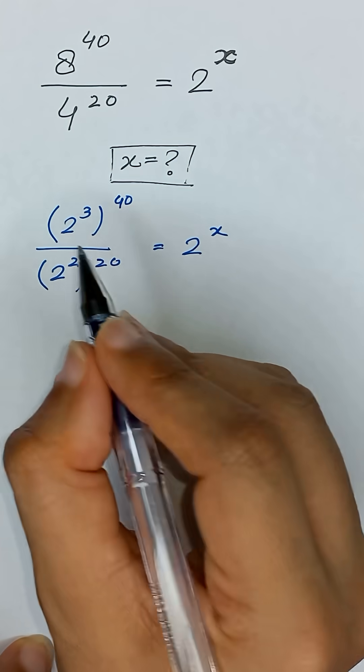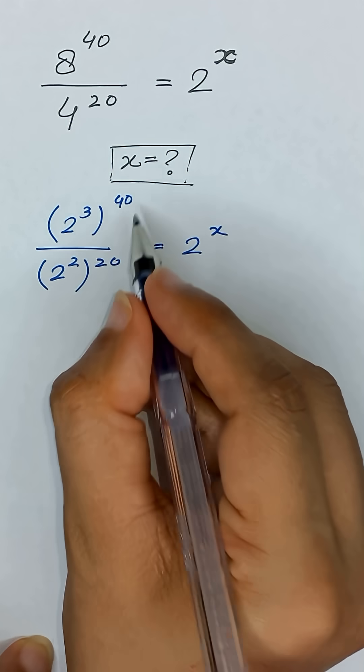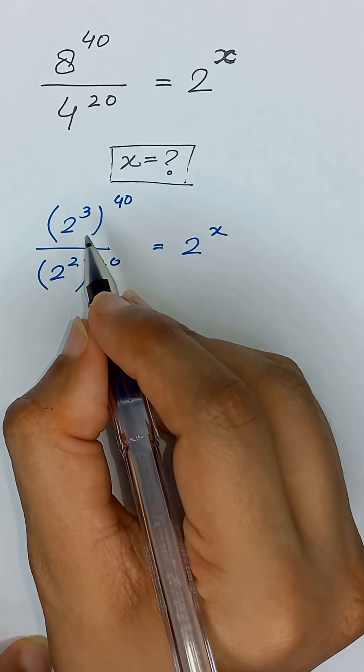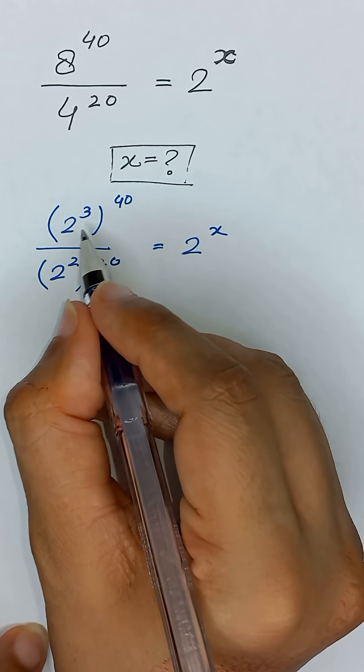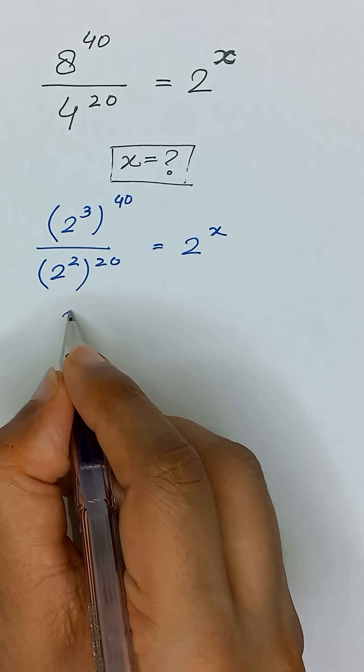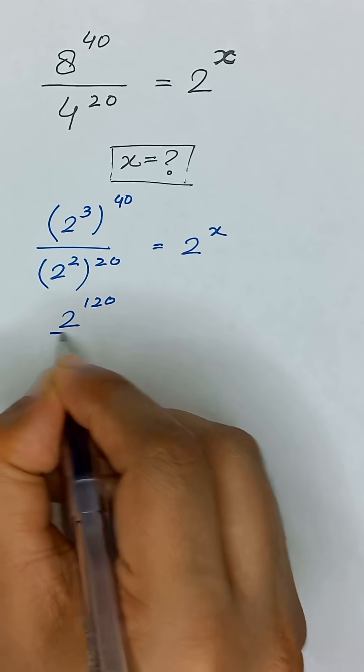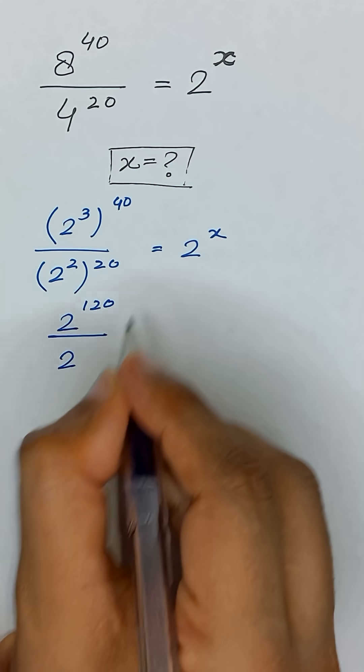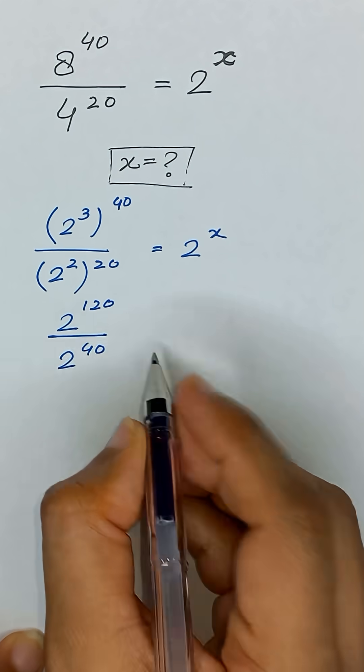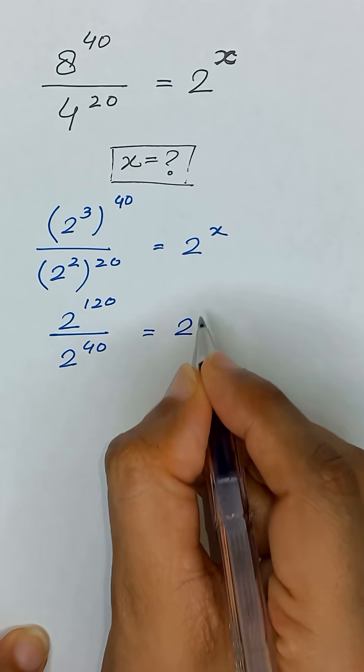As we know, the exponential rule which is a to the power m whole power n can be written as a to the power mn. So it will become 3 times 40, which gives us 120, divided by 2 times 20, which gives us 2 to the power 40, is equal to 2 to the power x.